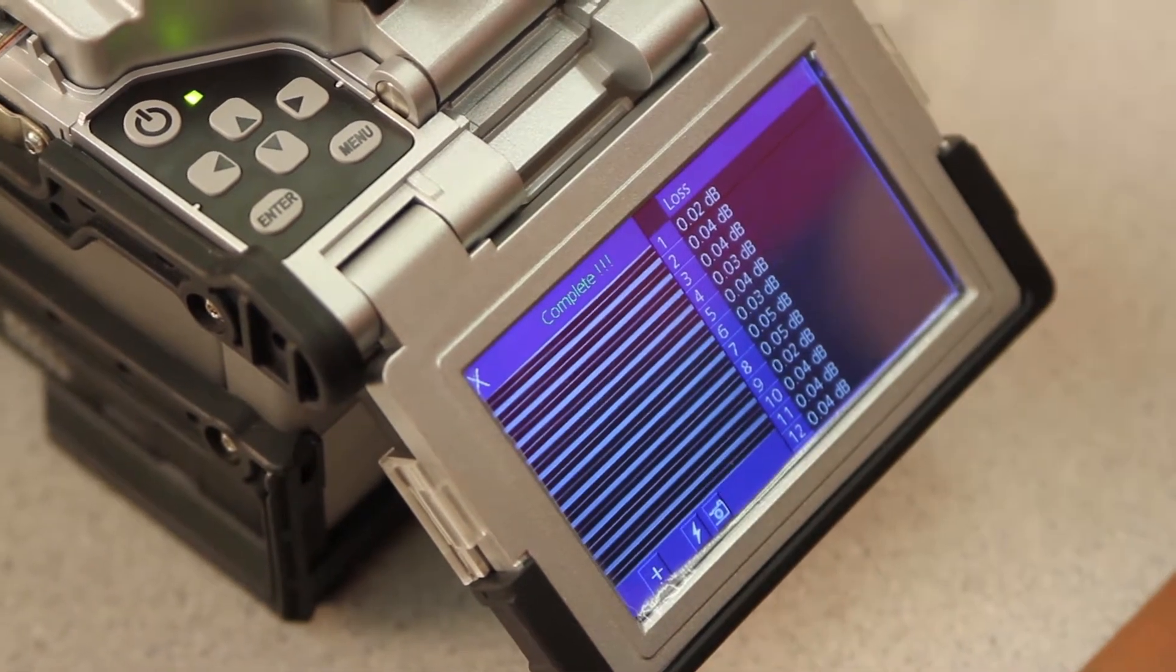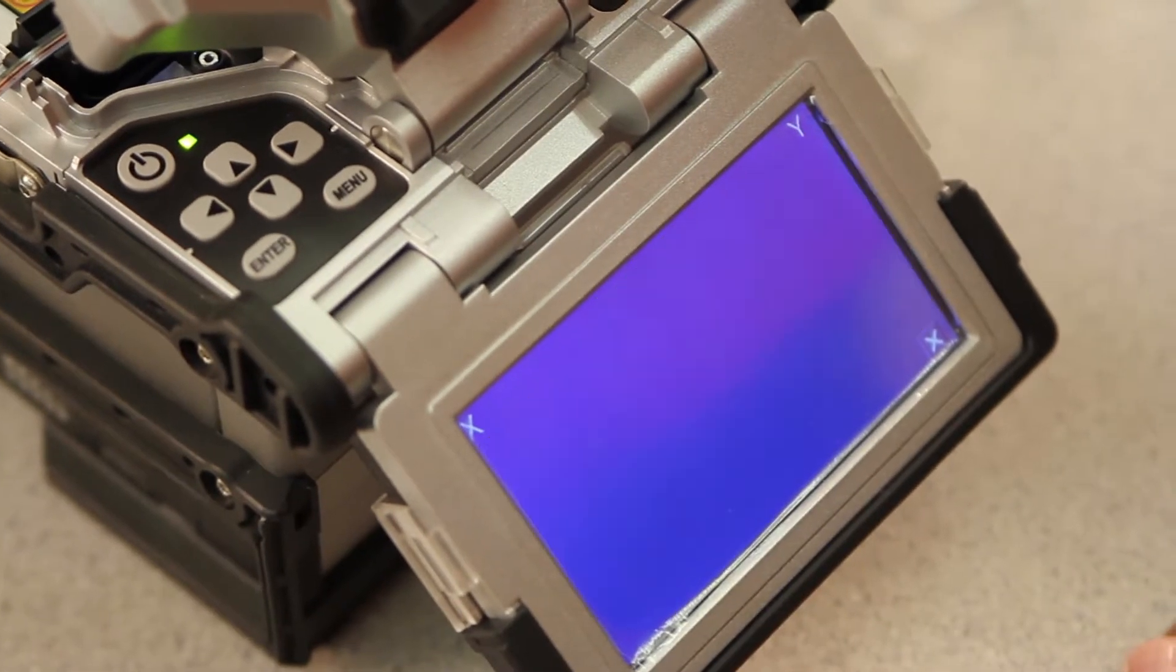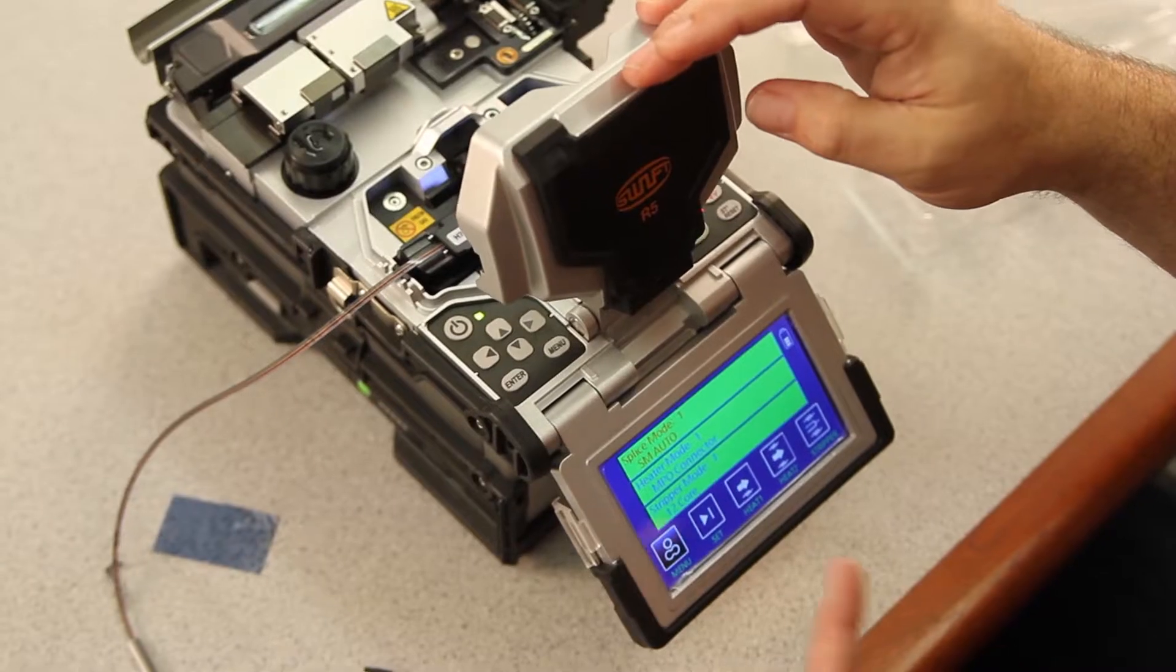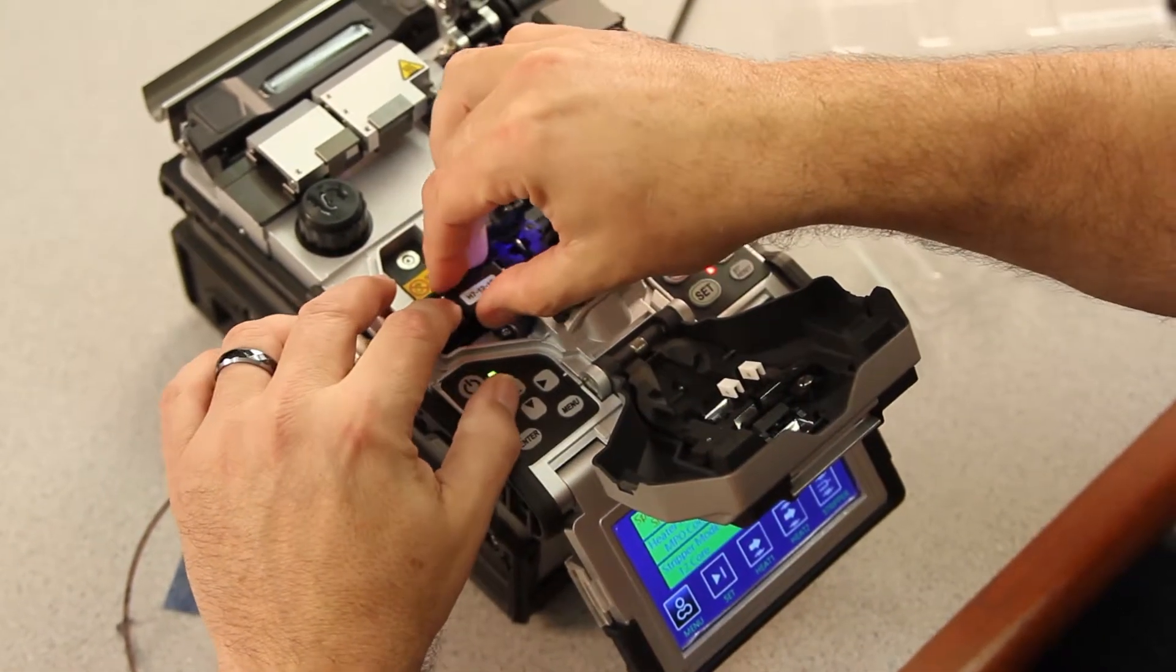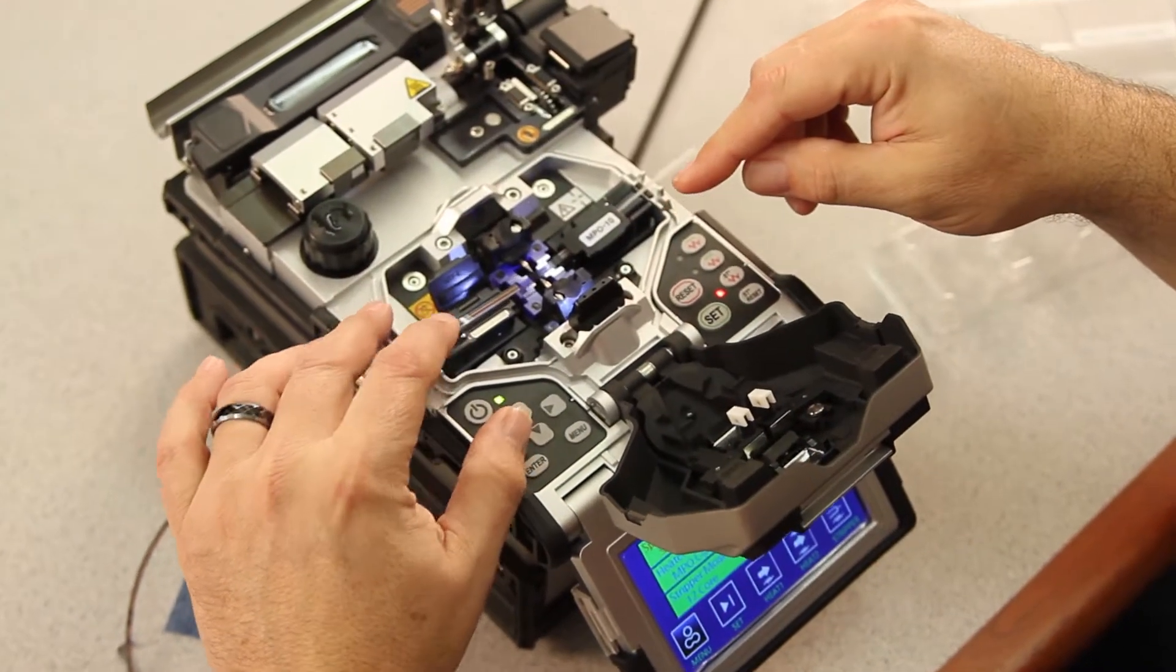Once complete, open your wind cover. Allow your tensile test to be performed. Once the screen comes back to your main screen, open your left side first, allow the tension to be released.